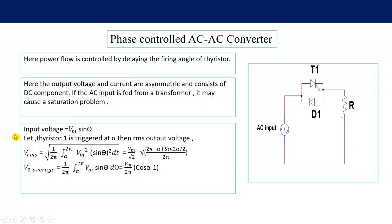Because of that DC component, if it is coming from a transformer, it may create a saturation problem across the core of the transformer. Now let's analyze the circuit. The input voltage is equal to Vm sin(θ), and let thyristor 1 be triggered at firing angle alpha. We need to find the RMS output voltage, so let's look at the waveform.